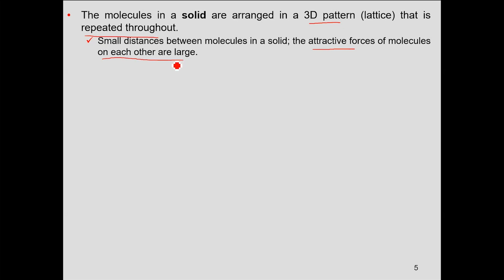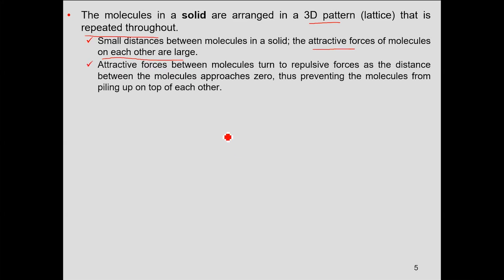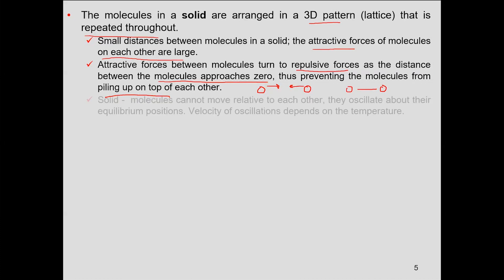You may wonder why solid molecules don't fall upon each other — that is due to repulsive forces that become dominant as molecules approach each other. As two atoms try to get closer, their electron clouds start repelling each other, so there is a specific distance at which the atoms remain and do not pile up on top of each other in the solid phase.